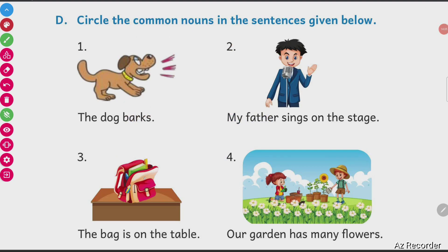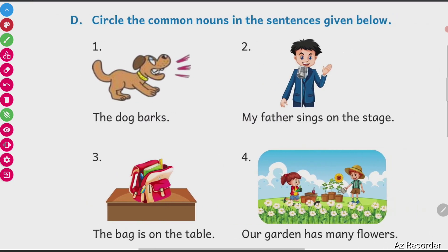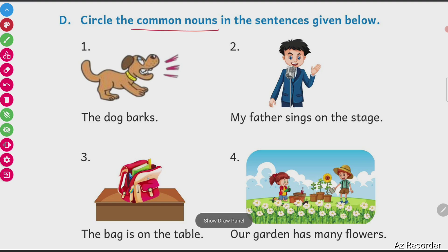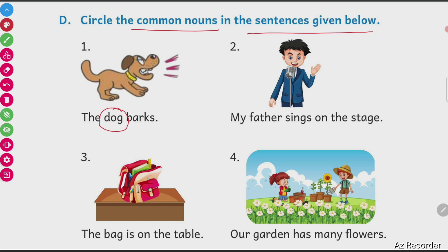Now what you have to do? You have to circle the common nouns. Common nouns means the common names I just told you, in the sentence given below. First sentence is: The dog barks. Dog is the common name for an animal. The second sentence is: My father sings on the stage. Father is the common name — a name used for all fathers.